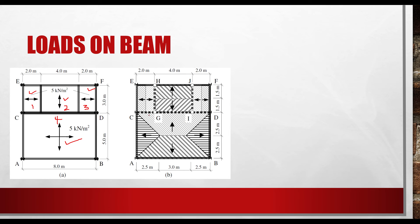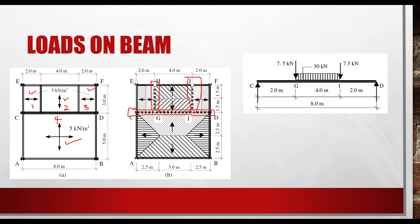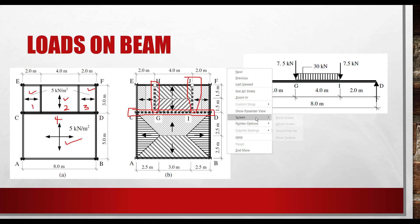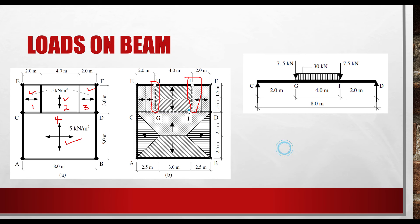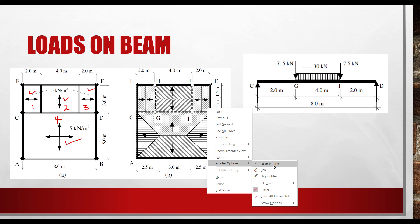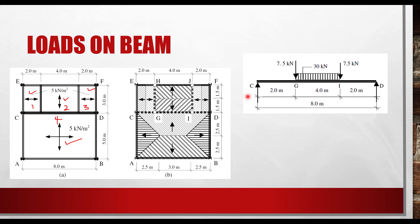In this case beam CD is the primary beam, while the beams along the vertical axis are secondary beams acting as point loads at points G and I along beam CD. This is illustrated in the diagram — beam CD has supports at column C and column D at each end.